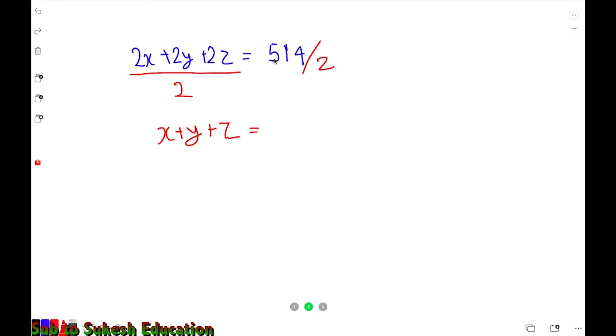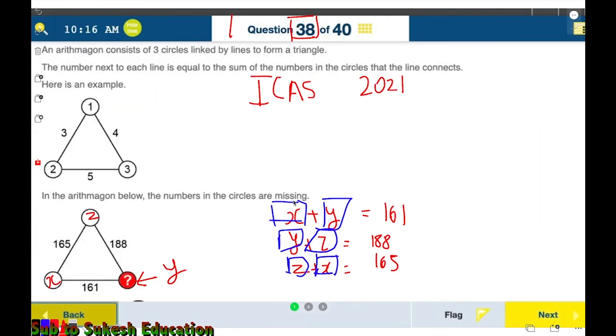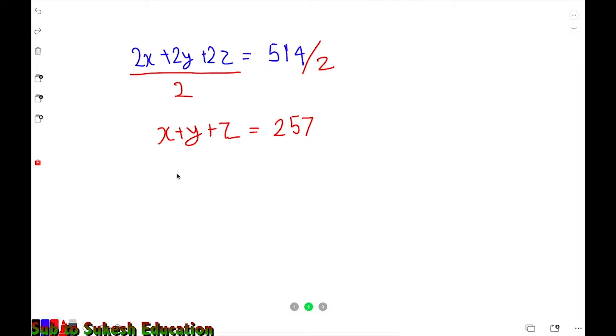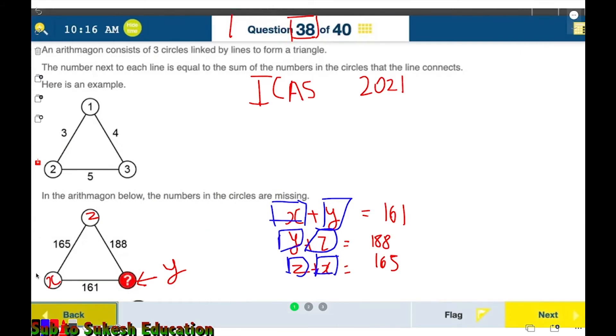514 divided by 2 gives us 257. Now we know that y plus z equals 188, so we can substitute that in. We know x plus 188 equals 257. To find x, you can write 257 minus 188, and if you carry this out, you'll get x equals 69. That's how you find x.